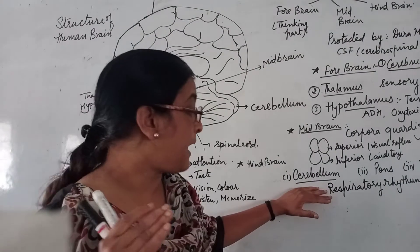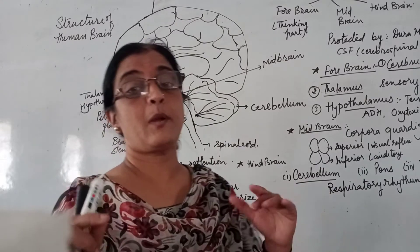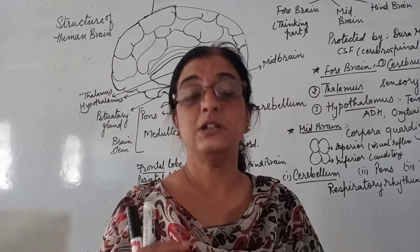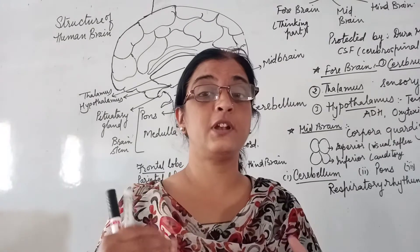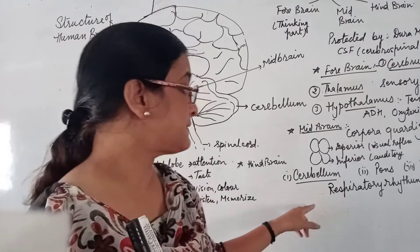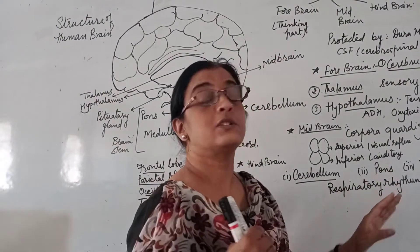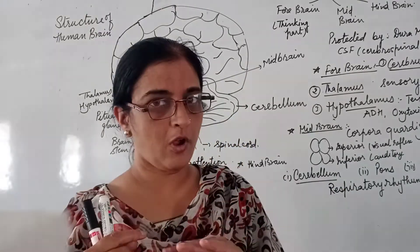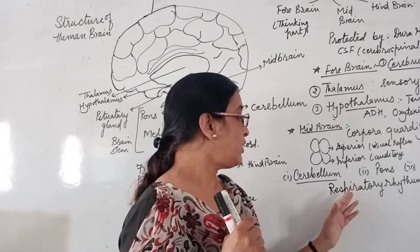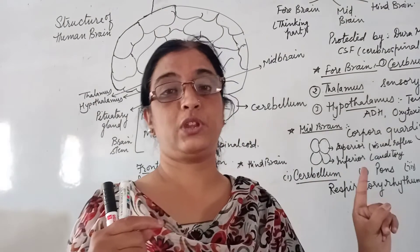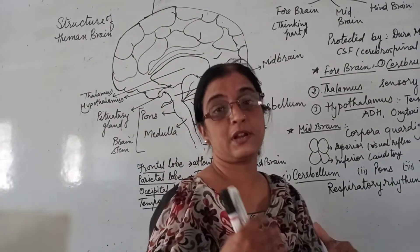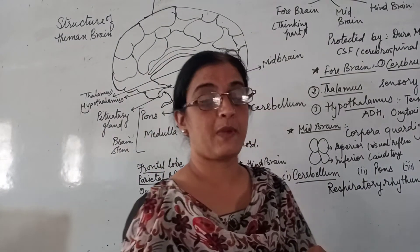The thalamus acts as a relay center. Just below the thalamus is the hypothalamus — 'hypo' means below. The hypothalamus is the center for temperature, thirst, hunger, and emotions. The hypothalamus also secretes hormones such as ADH hormone and oxytocin hormone.